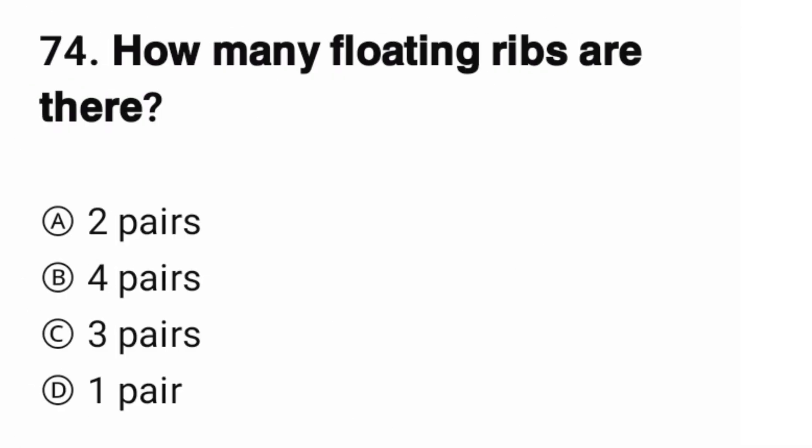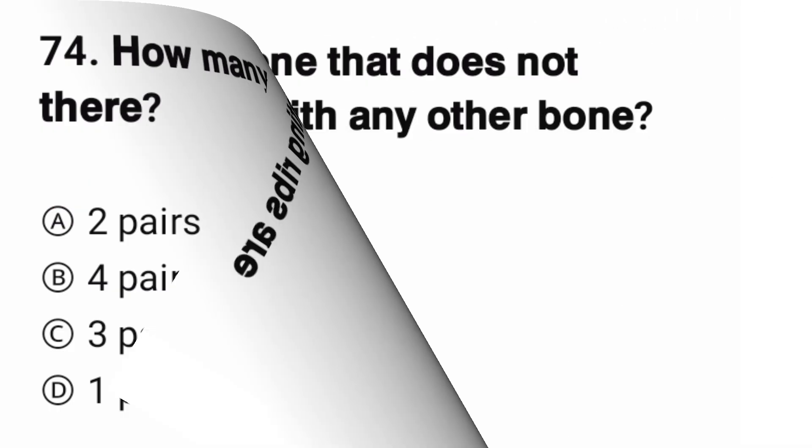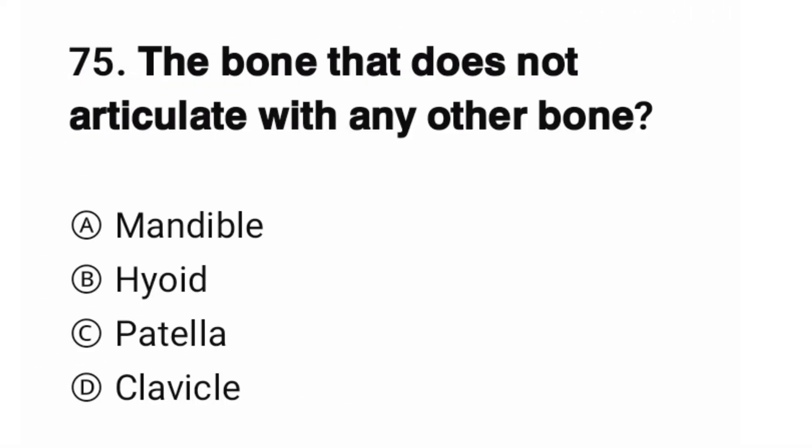Question number 74. How many floating ribs are there? The correct option is A, two pairs. Question number 75.